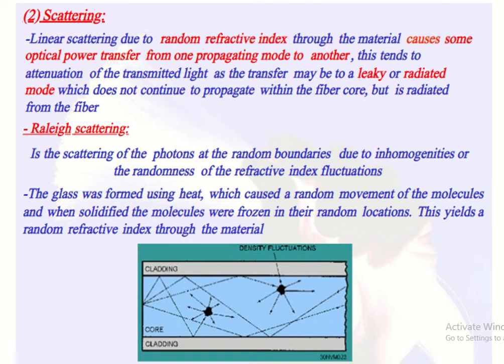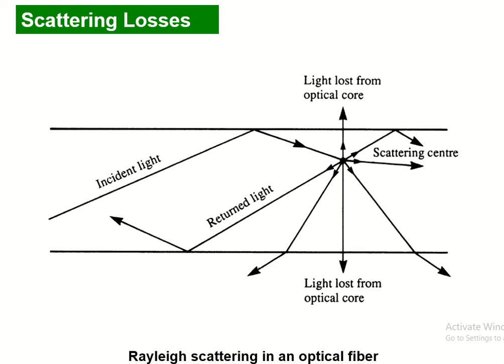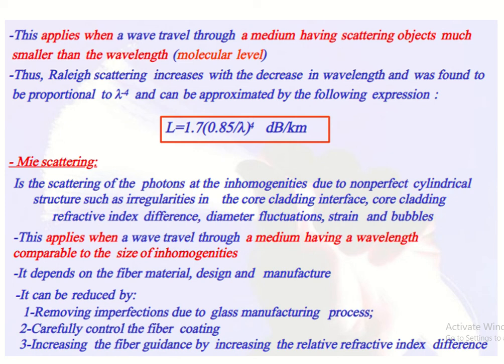When the glass solidifies, the molecules are frozen in their random locations, causing scattering loss in the optical fiber. As shown in this diagram, when light is incident in the optical fiber, it gets scattered in all directions. Rayleigh scattering increases with decreasing wavelength and is proportional to lambda to the power of minus 4. The scattering loss can be approximated by the equation: L = 1.7 × (0.85 / lambda)⁴ dB per kilometer.